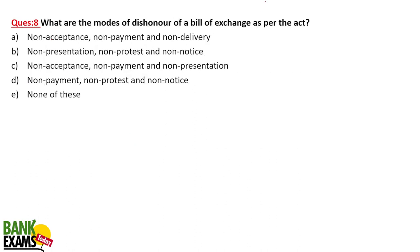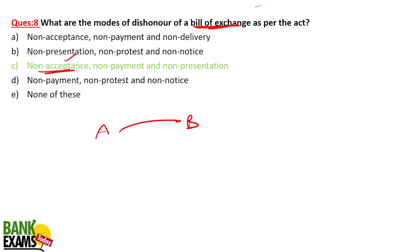What are the modes of dishonor of a bill of exchange? A bill of exchange can be dishonored in three ways: either payment is not made, or it is not accepted, or it is not even presented. For example, A drew a bill of exchange on B, but B didn't accept it, or B did not pay A on time. So due to non-acceptance, non-payment, and non-presentation, a bill of exchange can be dishonored.